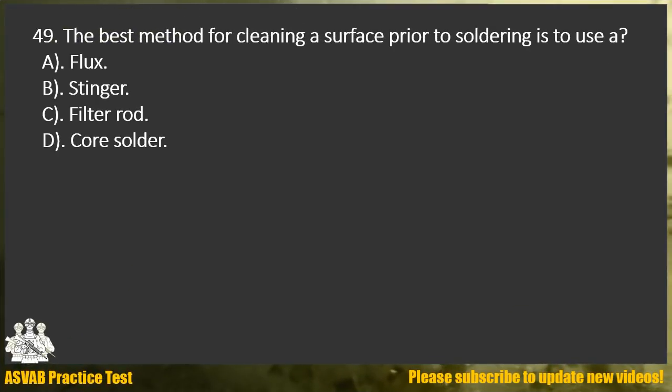Question 49. The best method for cleaning a surface prior to soldering is to use: A. Flux. B. Stinger. C. Filter rod. D. Core solder.